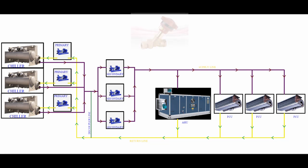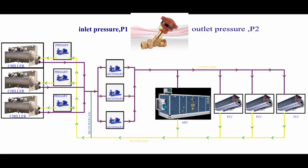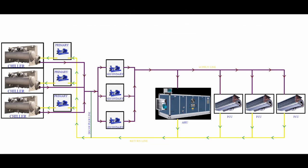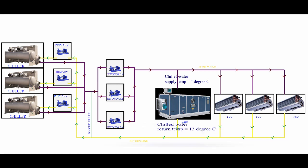Suppose we are using a double regulating valve for balancing — the flow rate through it will vary if any changes happen in its inlet or leaving pressure, that is the so-called differential pressure. At the time of water balancing, we calculate the differential pressure across the balancing valve and set the valve for the required flow rate using the valve manufacturer's data. But it is not a 100% balanced system — any changes in differential pressure cause a change in flow rate. This system has been designed with a delta T of 9°C. Consider this AHU: the inlet temperature is 4°C and leaving temperature is 13°C, so delta T is 9°C.